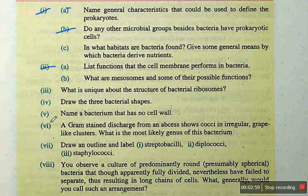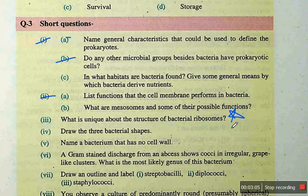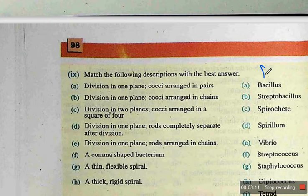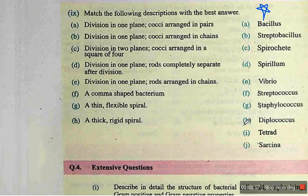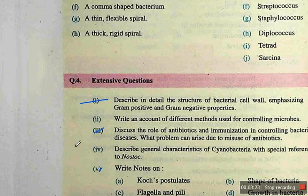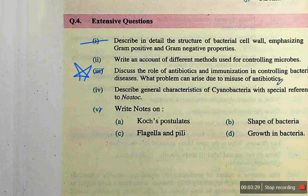The second part includes question 9 as well. If we talk about importance, certain questions are especially important for you. After that, your Match the Following with Description section is included. Moving to extensive questions, numbers 1, 3 and 5 are included. The most important is question number 3: Role of Antibiotics and Immunization in Controlling Bacterial Diseases. This is a very important topic and we have to study it well.